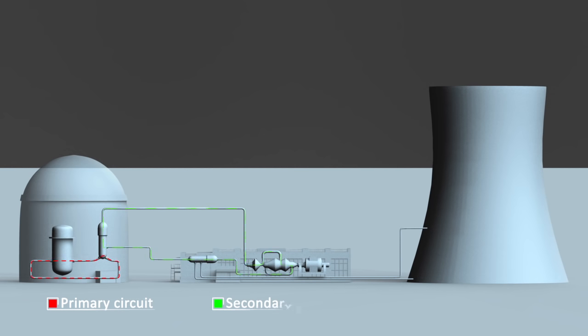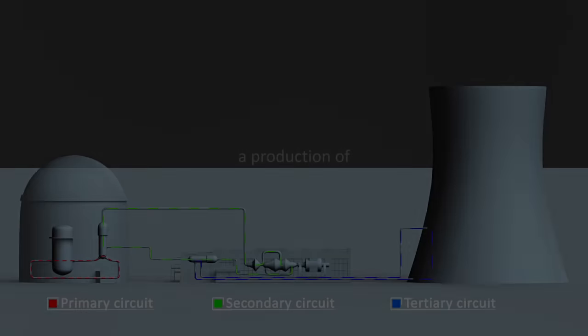Water in the secondary circulation system is used to drive the turbines and is not radioactive. The cooling circulation system provides cool water and is used to condense the steam in the secondary circulation system.